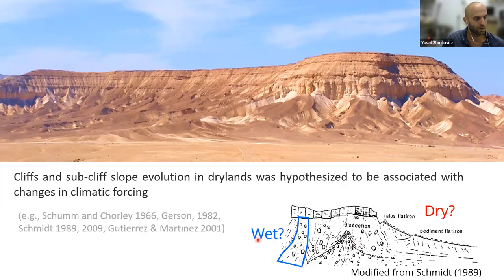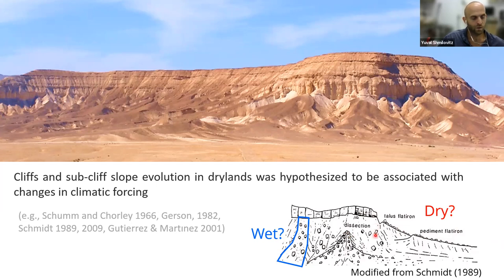One general conceptual model claims that during wet phases, sub-cliff slopes form a relatively continuous, undissected slope, while alternation into drier conditions detaches this continuous slope from the cliff — what is sometimes called talus flattening — and the cliff turns to a more sediment-starved mode. However, this topic is still really under debate. The correlation to general climatic conditions is not well established everywhere, and the understanding of the coupling between sediment supply, weathering, sediment transport on the slope, and climate is still poorly understood.